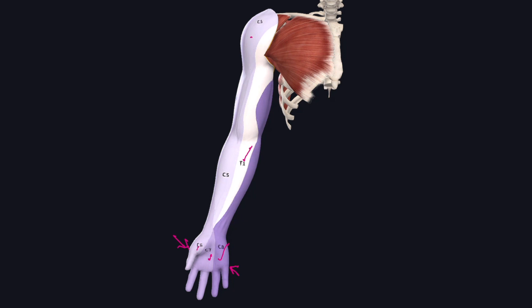The dermatome along the radial side of the arm is supplied by the C5 segment. The radial side of the forearm including the thumb is supplied by the C6 segment. The area of the little finger and the ulnar side of the forearm is supplied by the C8 segment. The ulnar side of the arm is supplied by T1. The C7 dermatome involves the middle three fingers and the adjacent palmar and dorsal surfaces.